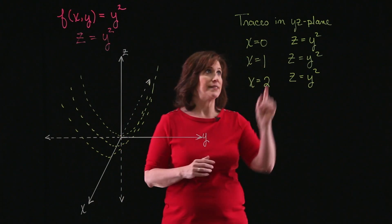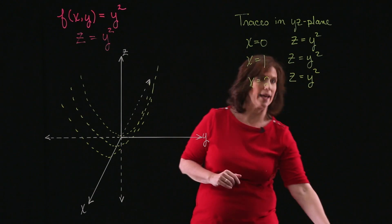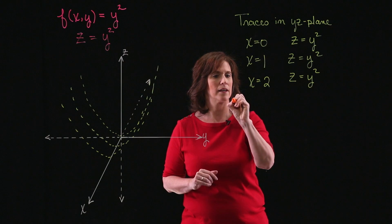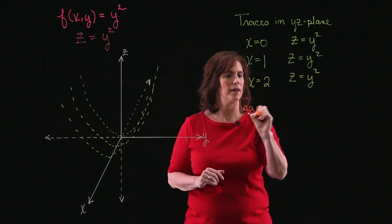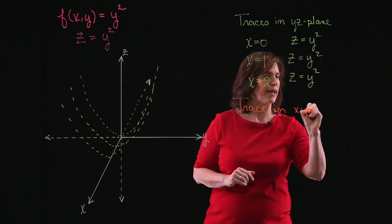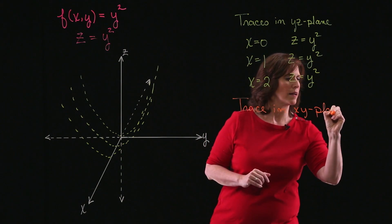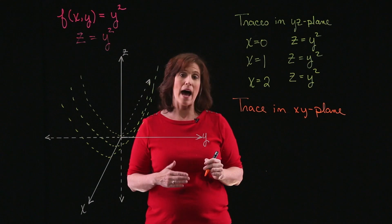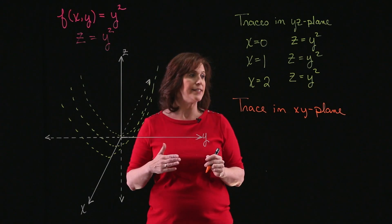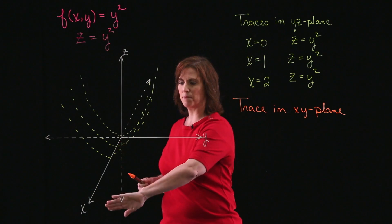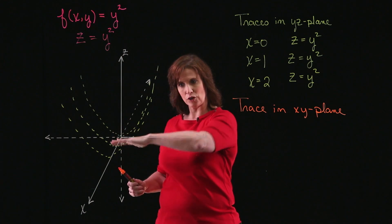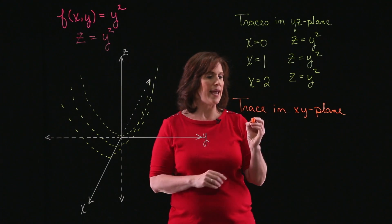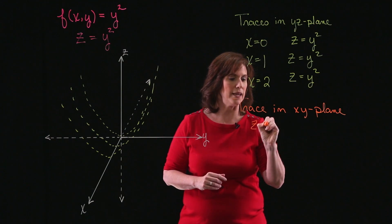OK, well, that gives me an idea of what's happening in the yz-plane. Now let's go ahead and look at a trace in the xy-plane. So again, if I'm looking at a trace in the xy-plane, I'm going to be taking planes that are parallel to xy, which is this plane that is lying straight out across from me. So in this case, let's take z to be equal to 0.